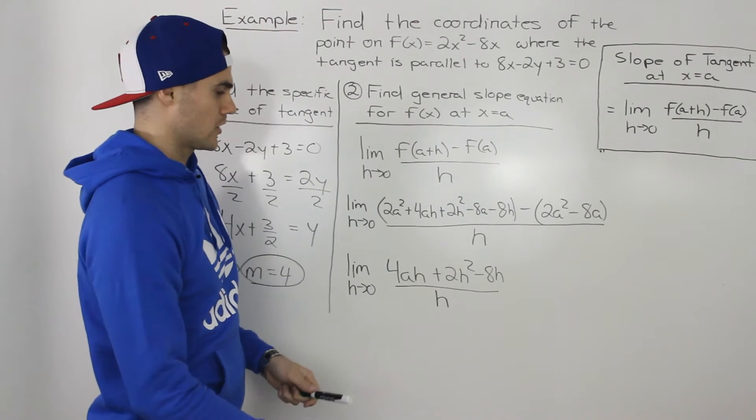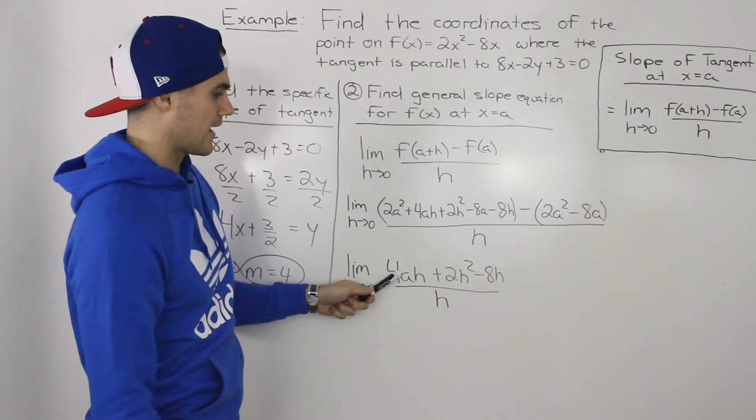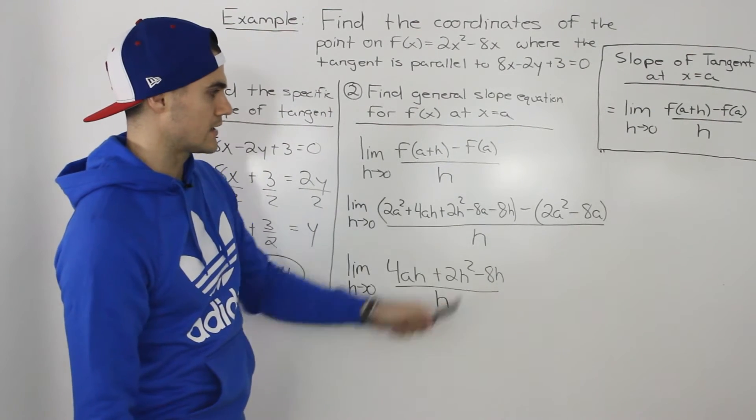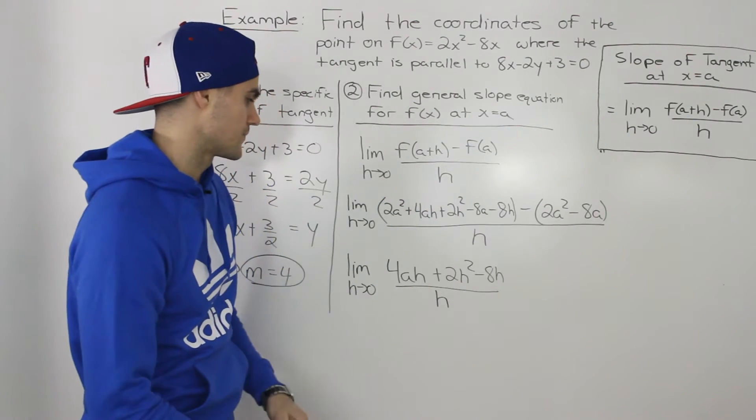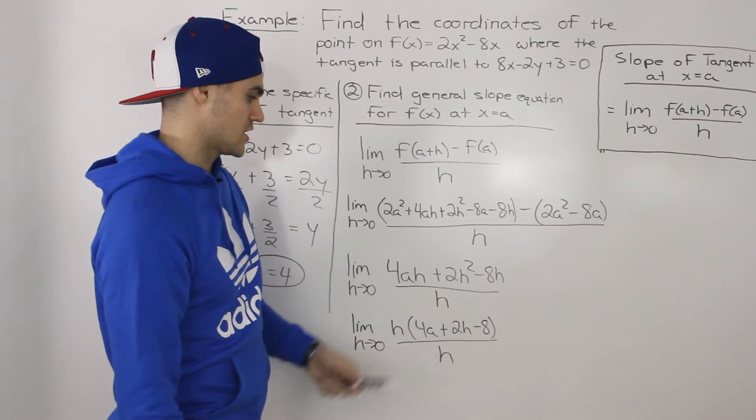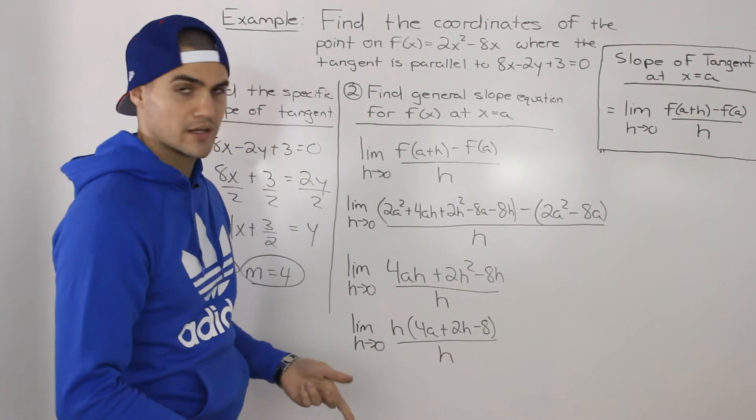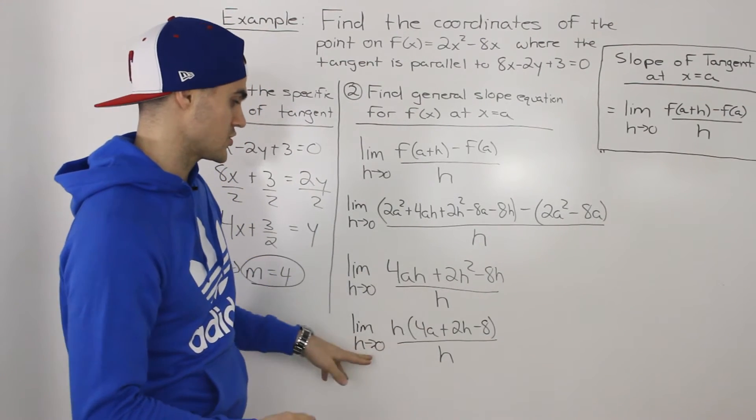And this is still all over h. So then simplifying that numerator, we would end up with 4ah + 2h² - 8h. The 2a²'s and the 8a's would cancel out. And then like usual, we want to get rid of that h in the denominator, so we can sub in 0 into the expression for h.